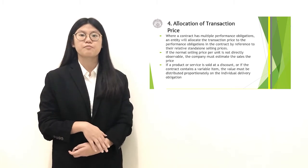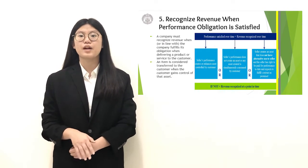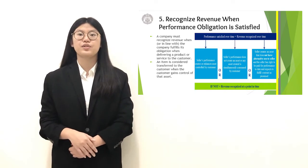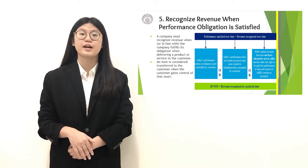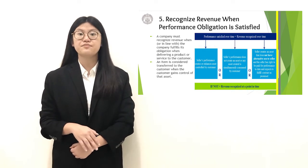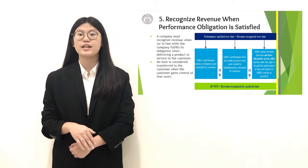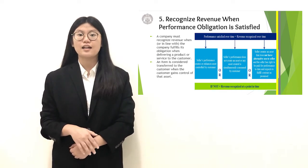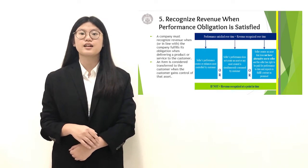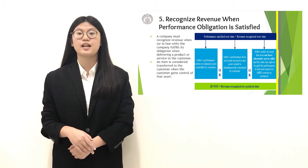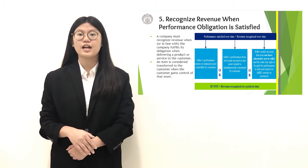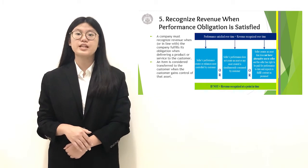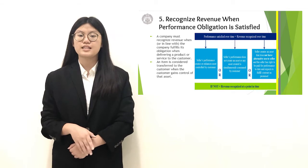Now we move to the fifth step: the recognition of revenue. Revenue can be recognized either at one point in time or over time. An entity recognizes revenue over time only if at least one of the following criteria is met: the customer simultaneously receives and consumes the economic benefits of the provided asset as the entity performs; the seller's performance creates or enhances an asset controlled by the customer; or the seller's performance creates an asset with no alternative use and the seller has an enforceable right to payment for performance completed. If a performance obligation is not satisfied over time, then the entity recognizes it at one point in time.